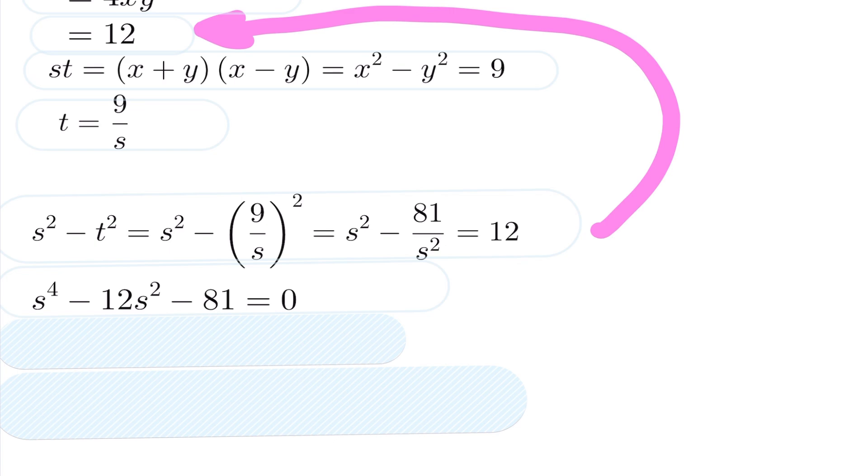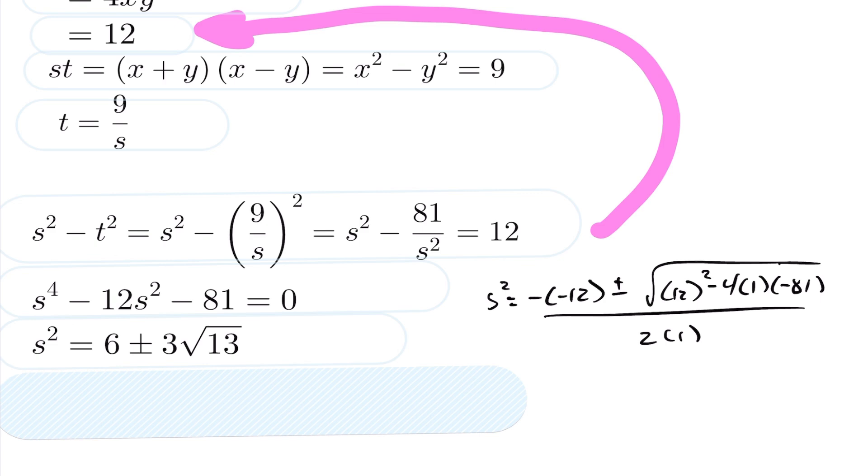I can go ahead and do my quadratic equation on this. If you let s squared equal negative b, in this case, plus or minus, the square root of b squared minus 4ac, and divide that whole thing by 2a, you end up getting here your s squared is 6 plus or minus 3 root 13.